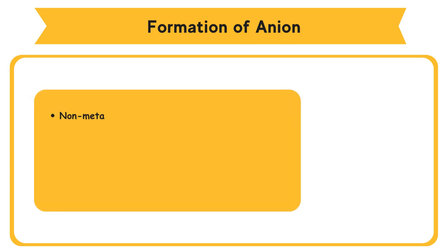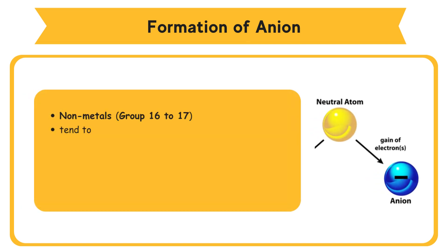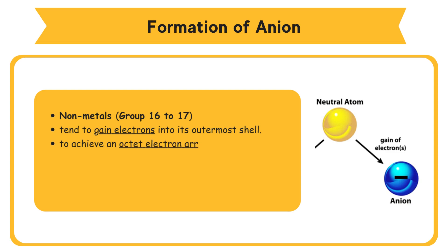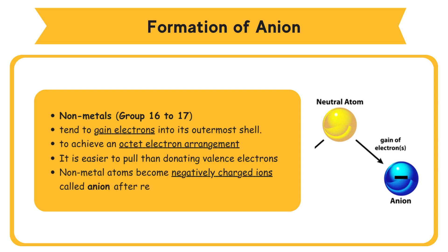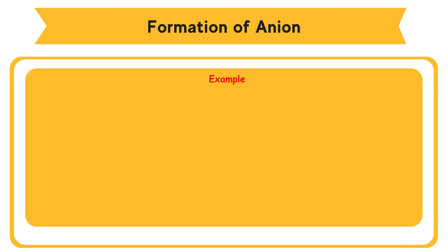Formation of anion: elements that are non-metals — Group 16 to 17 — tend to gain electrons into their outermost shell. These elements achieve an octet electron arrangement after the outermost shell is fully filled with electrons. It is easier for a non-metal atom to pull another one or two electrons into its valence shell than donating another six or seven valence electrons to attain the stable electron arrangement. Non-metal atoms become negatively charged ions called anions after receiving electrons.